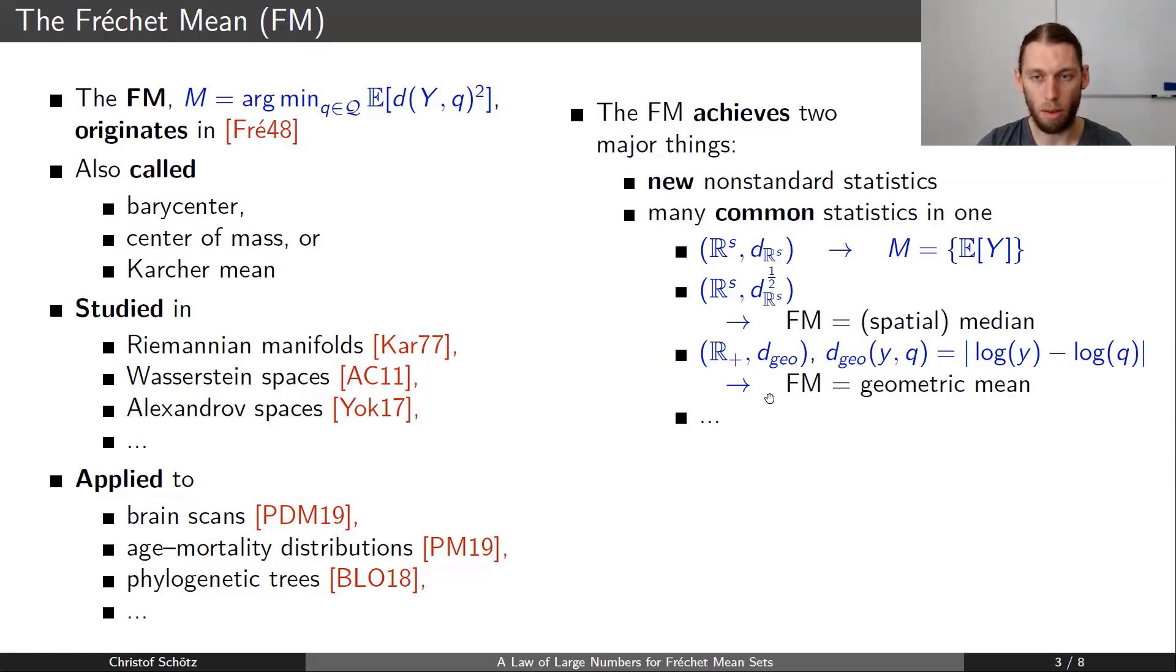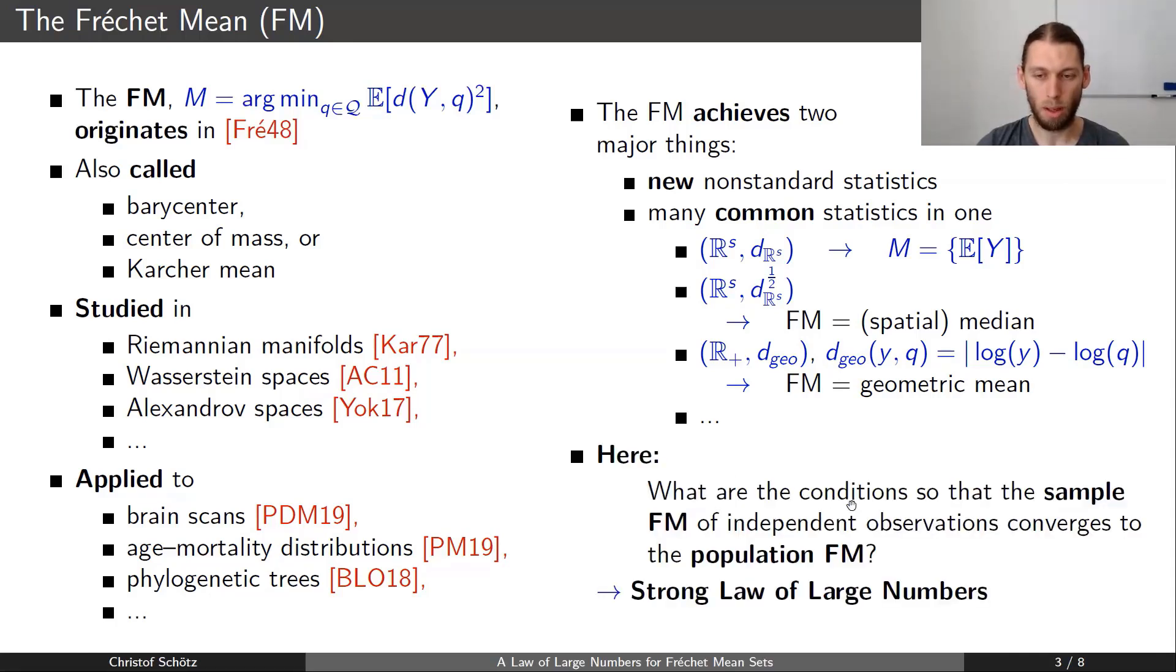So if you prove a theorem about the Fréchet mean, you actually show something about a lot of interesting statistics. Here I want to show some conditions so that the sample Fréchet mean of independent observations converges to the population Fréchet mean, and this convergence should be almost surely, so we will see a strong law of large numbers.